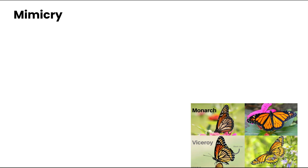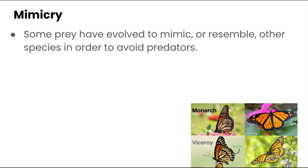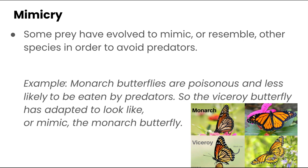A really neat natural phenomenon worth knowing about is mimicry. Some prey have evolved to mimic or resemble other species in order to avoid predators. A great example is the monarch butterfly. Monarch butterflies are poisonous and less likely to be eaten by predators. The viceroy butterfly has adapted to look like and mimic the monarch butterfly, but eating it is not actually poisonous to predators — yet they're less likely to be eaten because they look like a monarch butterfly.